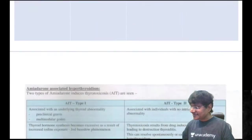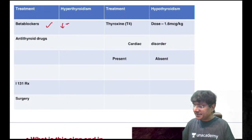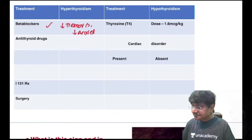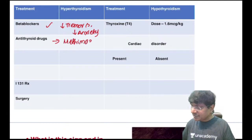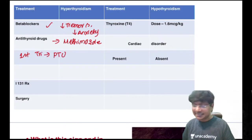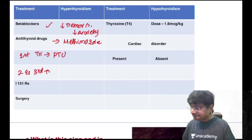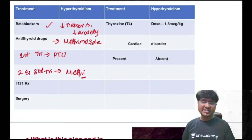Treatment of hyperthyroidism: beta blockers are given to reduce tremors and anxiety. Drug of choice is methimazole. In pregnancy (first trimester), propylthiouracil is used because methimazole is teratogenic (causes aplasia cutis). In second and third trimester, methimazole is used again because propylthiouracil is severely hepatotoxic, causing severe hepatic fibrosis.